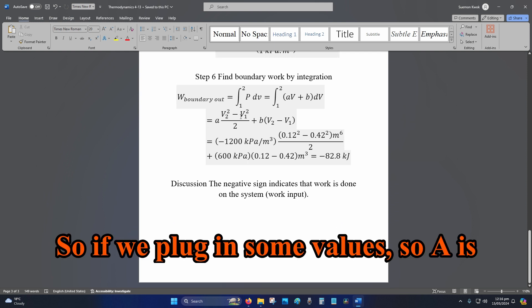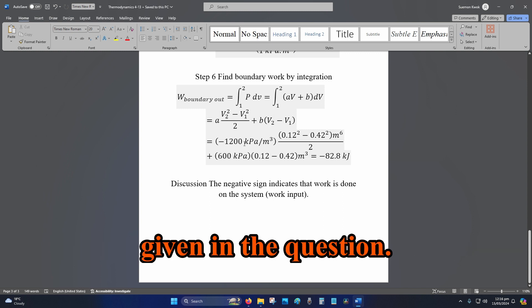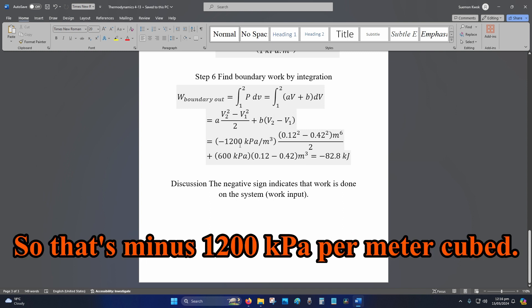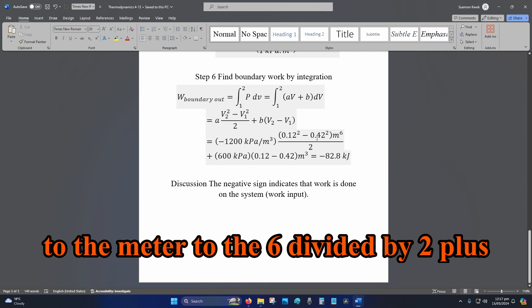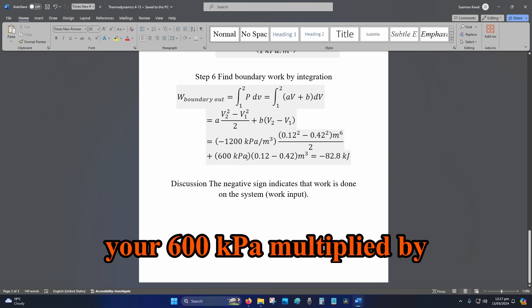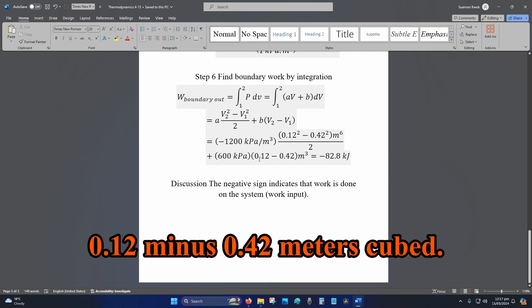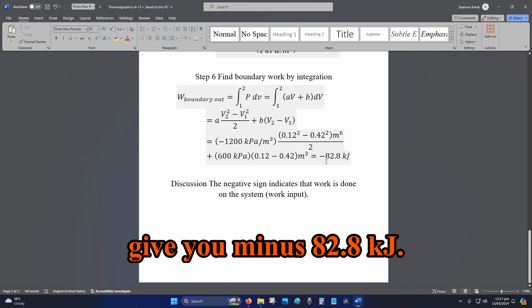So if we plug in the values, A is minus 1200 kPa per meter cubed, then you've got your volumes squared divided by 2 plus 600 kPa multiplied by 0.12 minus 0.42 meters cubed. And that will also give you minus 82.8 kJ.